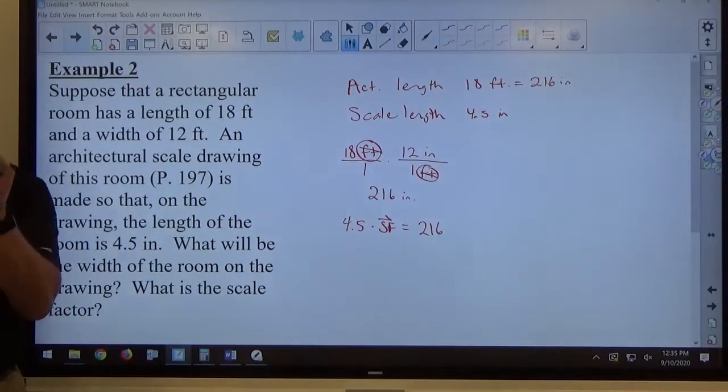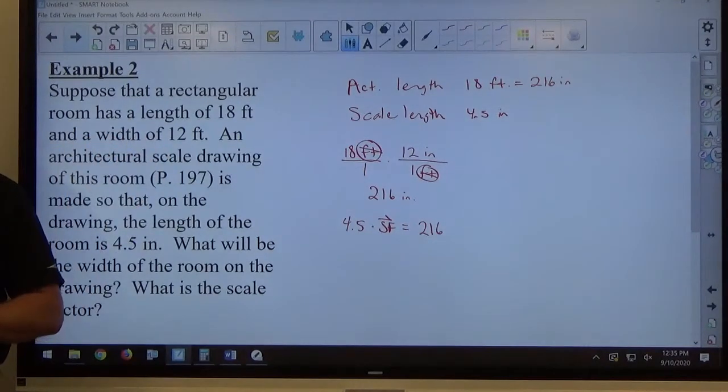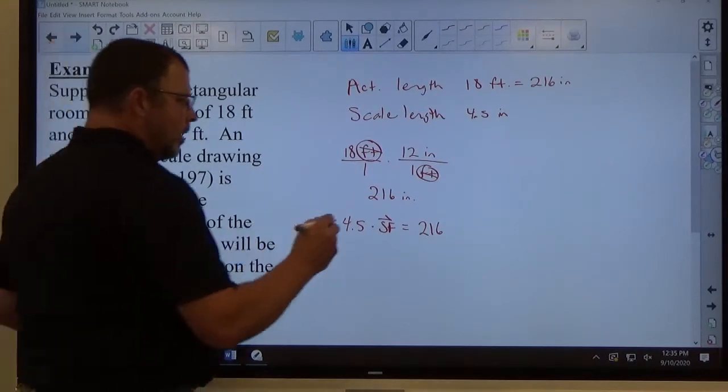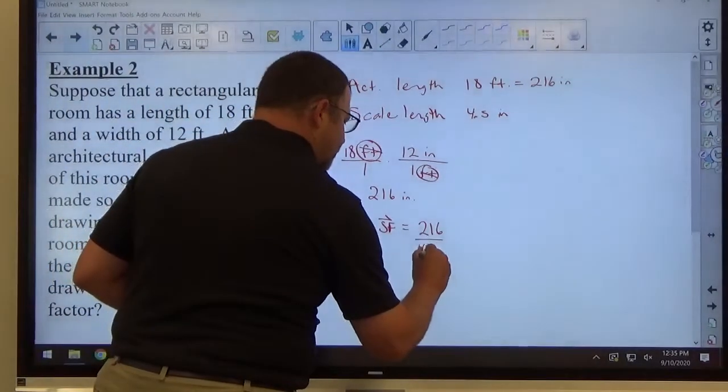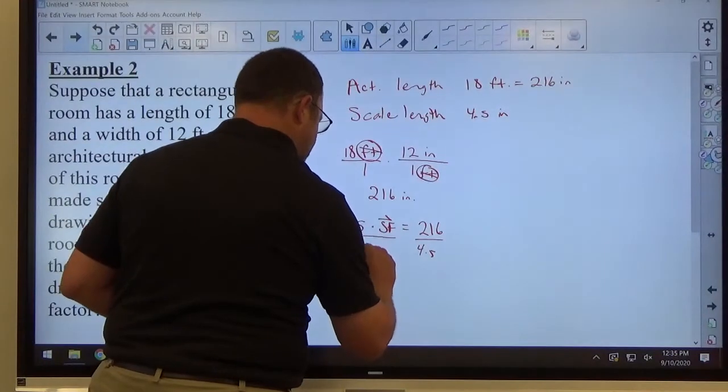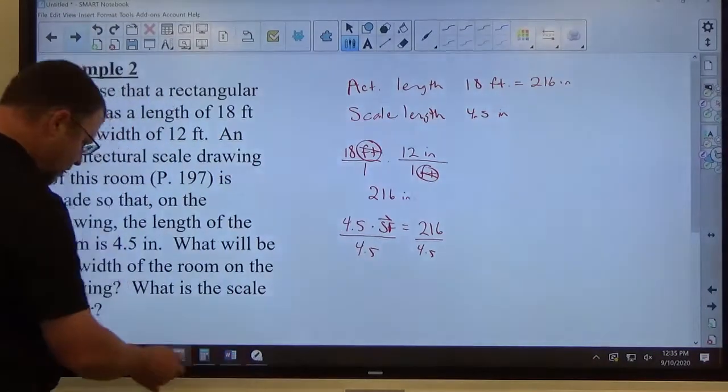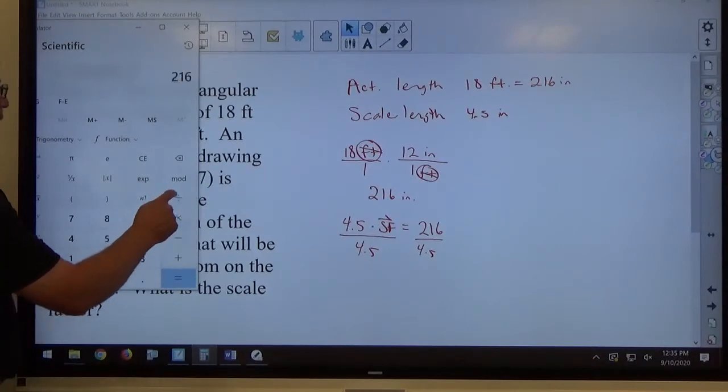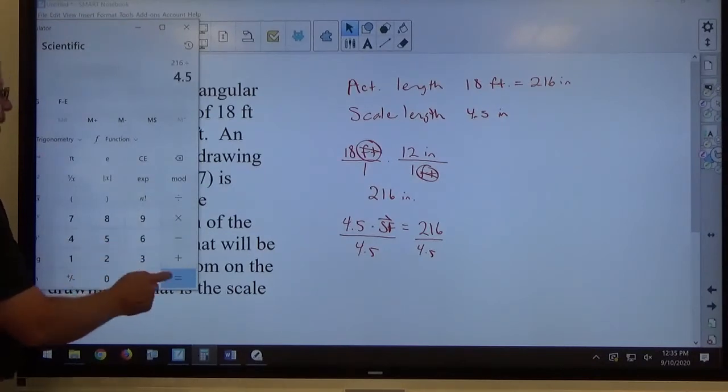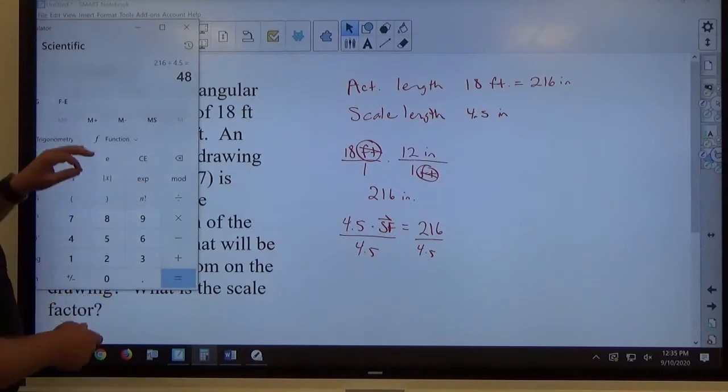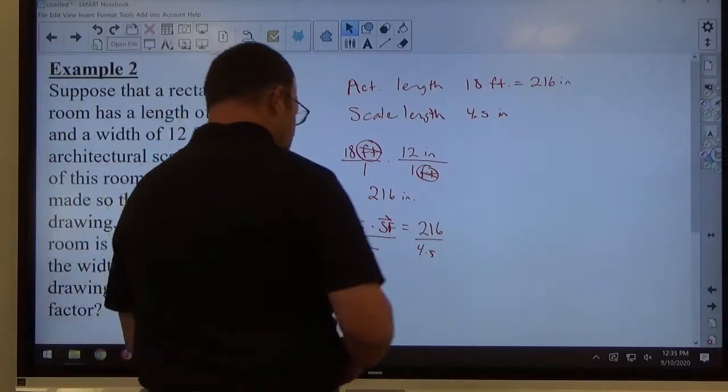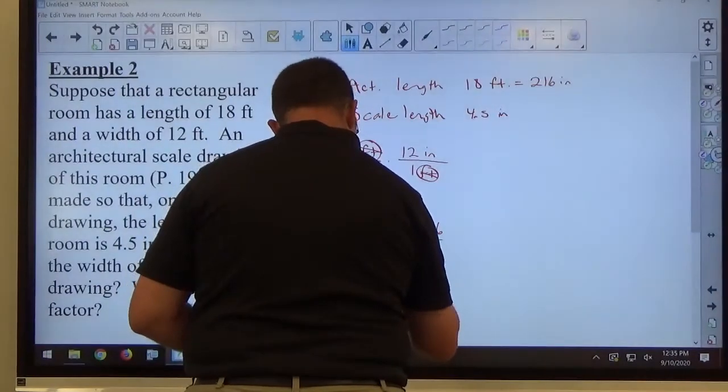And I typically go small times scale factor equals big when I'm doing these. It makes the answer coming out to a whole number much more likely. Divide both sides by 4.5 to get our answer. And my calculator has the capacity to do that for me. So, I'm going to type in 216 divided by 4.5. That comes out to 48. That's interesting. I think the book might come up with some different numbers for us. But the scale factor on this specific drawing is also 48.